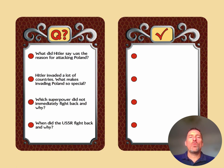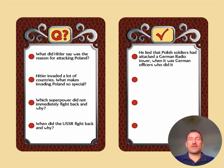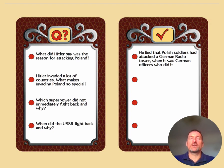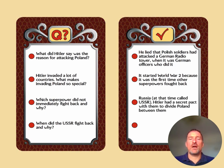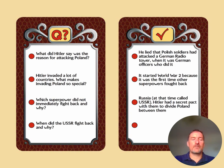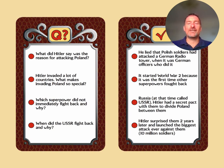Here are some questions about Hitler. What did Hitler say was the reason for attacking Poland? Basically, he lied — he said that Polish soldiers had attacked a German radio tower, when actually it was German officers who had done that. What makes invading Poland so special? It started World War II, because it was the first time other countries fought back as allies of Poland. Which superpower did not immediately fight back, and why? Russia — the USSR — had a secret pact with Hitler to divide Poland between them. When did the USSR begin to fight back? Two years later, when Hitler surprised them and launched the biggest attack ever against them with 10 million soldiers.